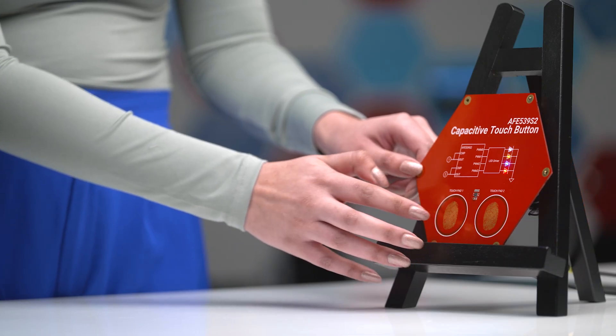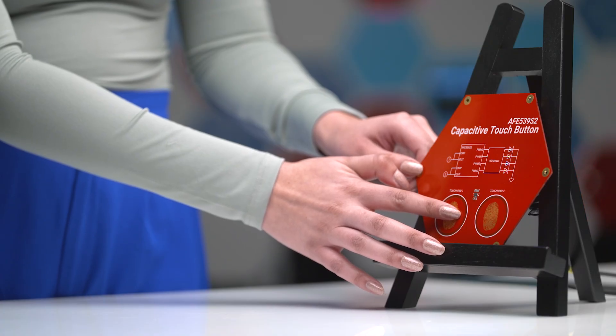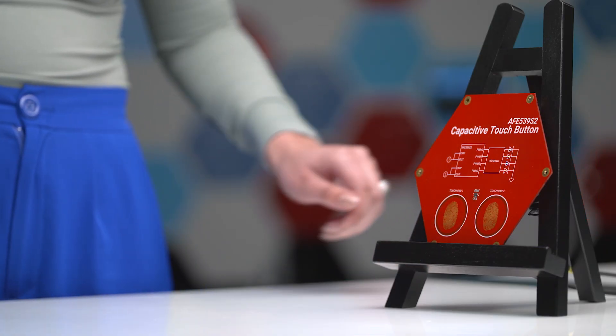AFE 539 S2 is a perfect choice for systems that require basic capacitive touch base control. Applications include reading lights, power buttons, locks, and more.